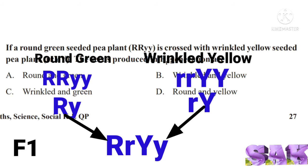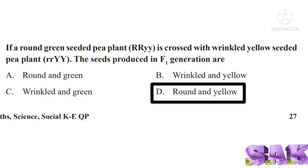Capital R is dominant character which expresses round shape. Likewise, capital Y is also dominant which expresses yellow color. So F1 plant is round yellow seeded plant. So correct answer is option D, round and yellow.